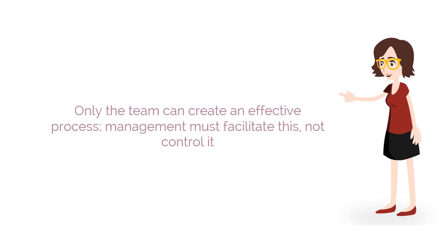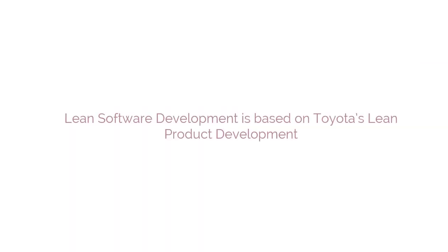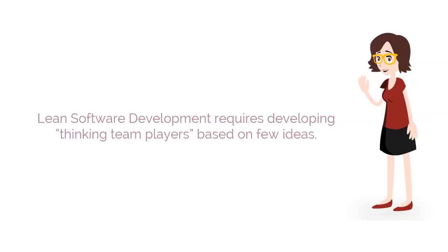Only by continuously improving processes and increasing the quality of both products and processes can high speed and low cost be sustained. While understanding lean software development, it is important to know the lean values. Lean software development is based on Toyota's lean product development. The process of lean software development requires developing thinking team players.